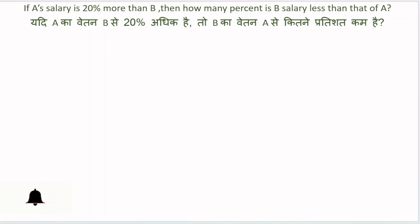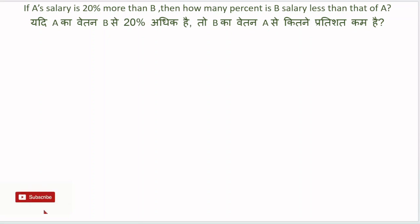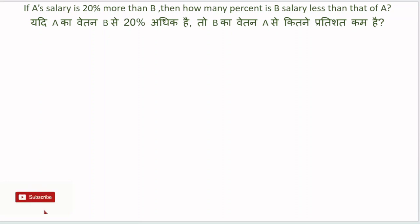If A's salary is 20% more than B, then how many percent is B's salary less than that of A? Yadi A ka vetan B se 20% adhik hai, to B ka vetan A se kitne pratishat kam hai nikalna hai?